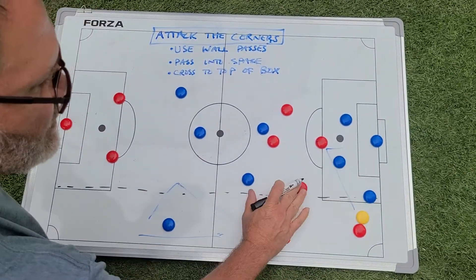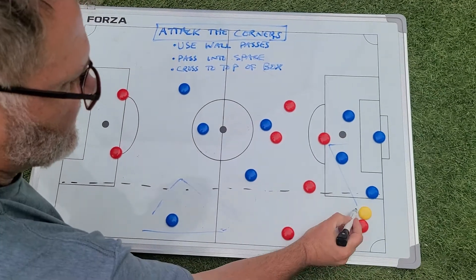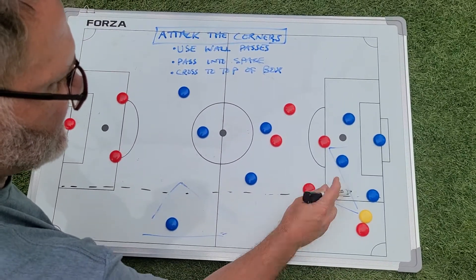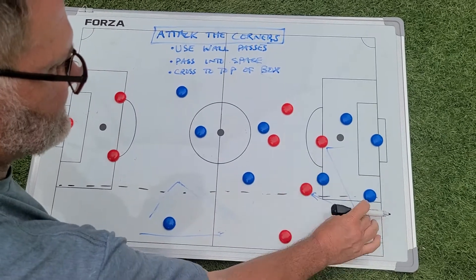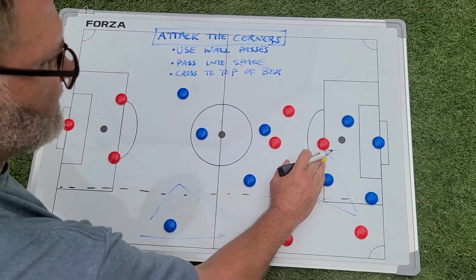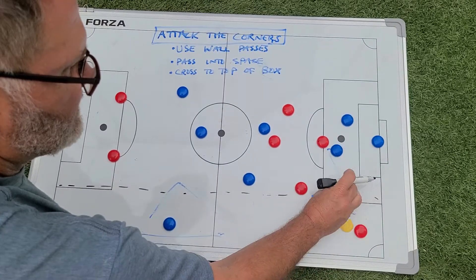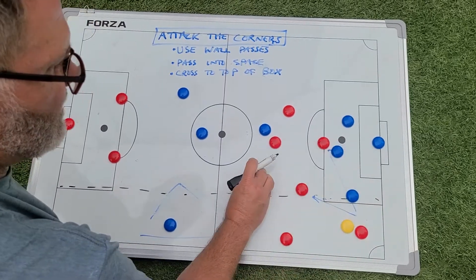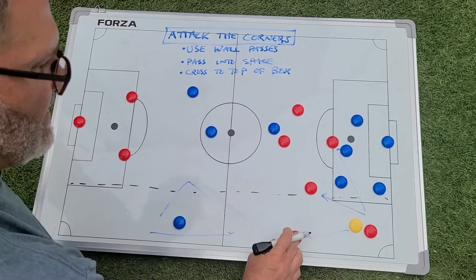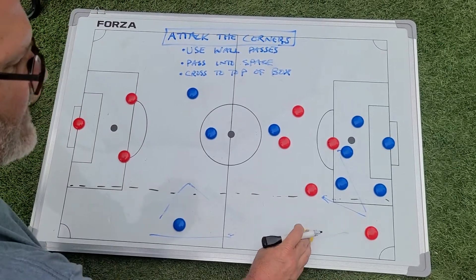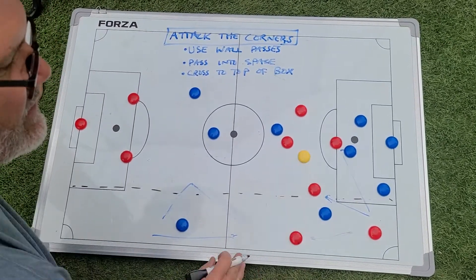If the striker's not open, our right midfielder is also another good pass, and we can pass there. And then as the pressure comes, we can pass immediately back to the striker and shoot. If all of these players are covered, we can come back to our right defender, who can then hopefully cross over into the middle.